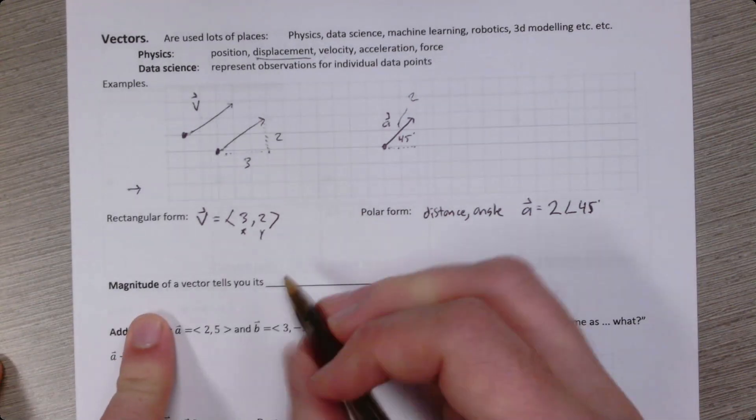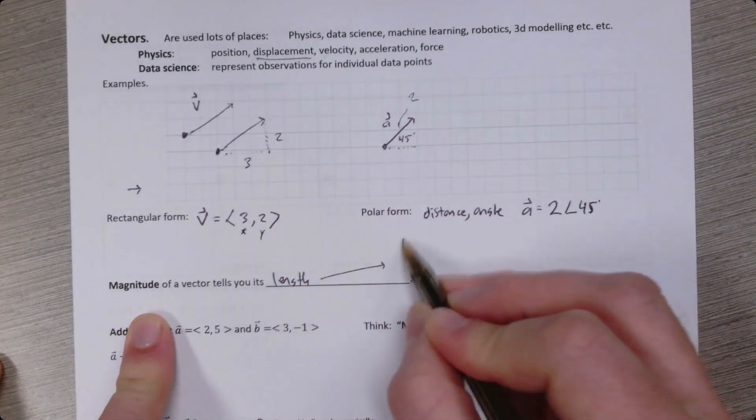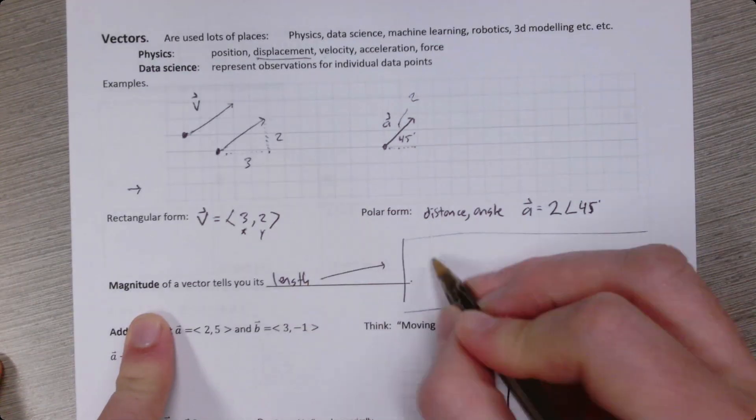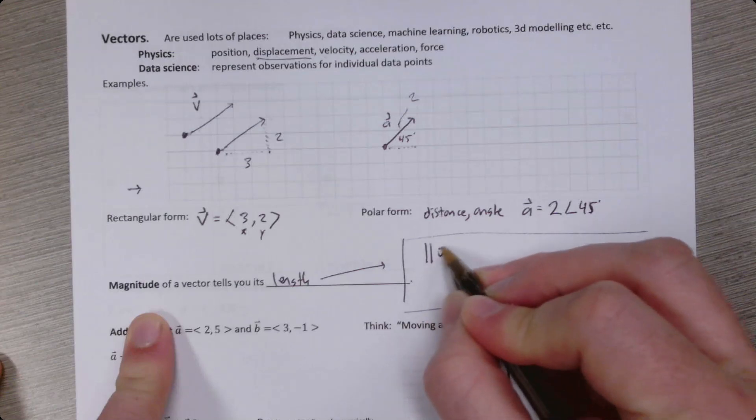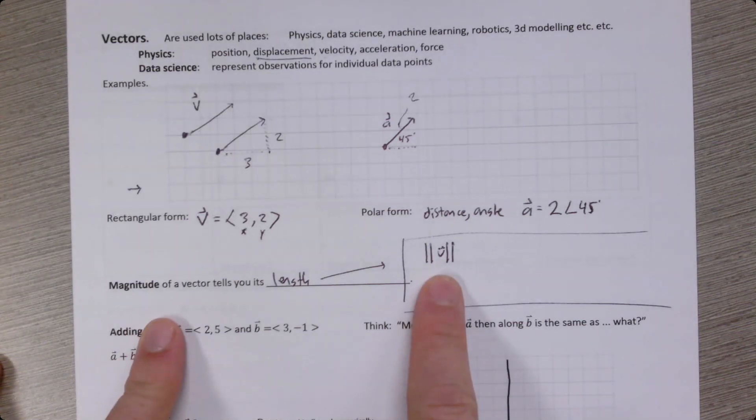Okay, last thing, magnitude of a vector tells you its length. And it is notated this way. Let's make a little box. So with two vertical arrows, it sort of looks like absolute value. Because if you think, let's think for a minute about what does absolute value mean.